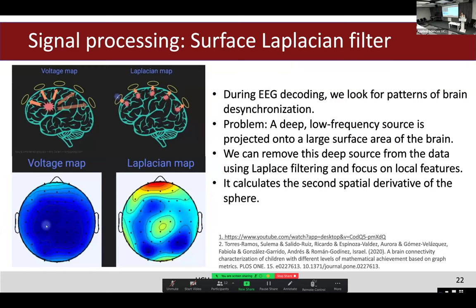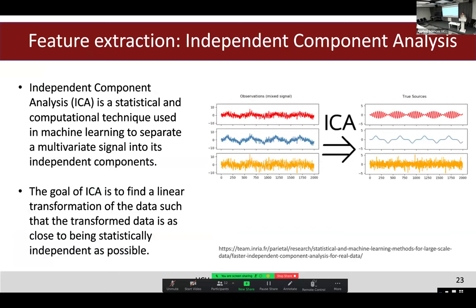The Surface Laplacian filter is a really interesting algorithm — I never heard about it before working with EEG signals. It removes low-frequency signals coming from deep brain layers and focuses on local correlations near the brain surface. As shown in the image, after applying the Laplacian filter you have clearer local activity near the surface of the brain compared to the unfiltered version.